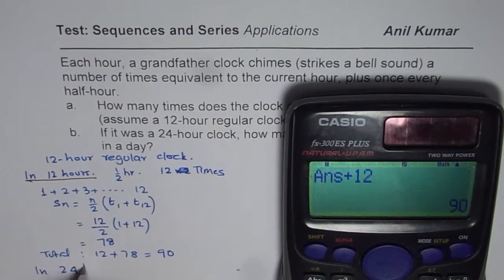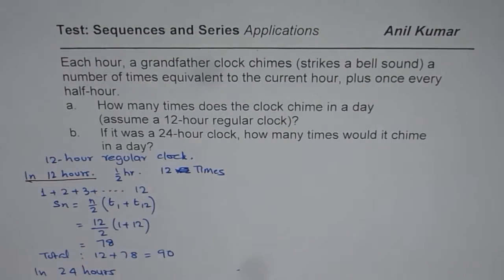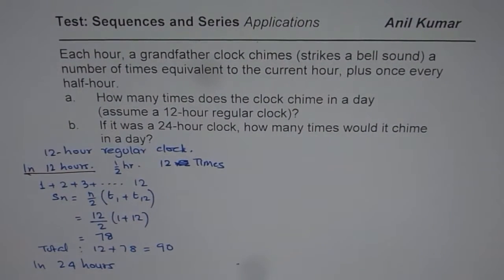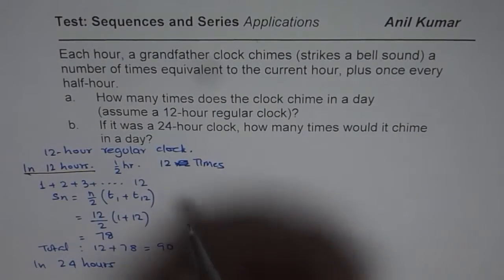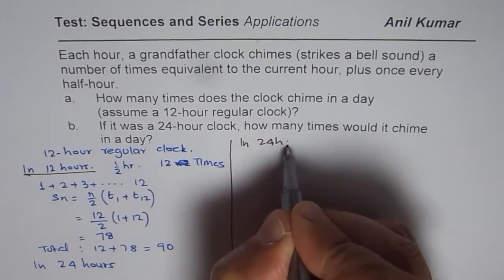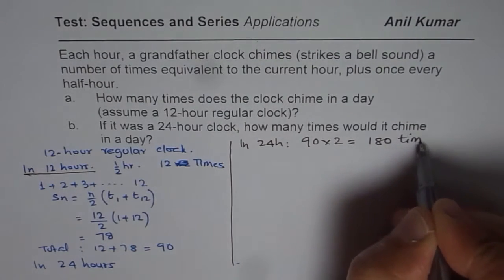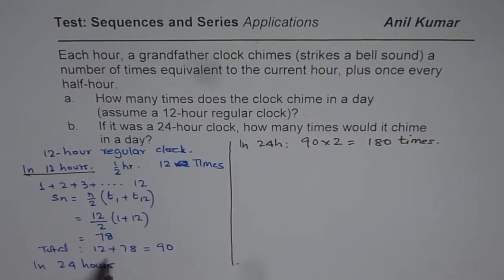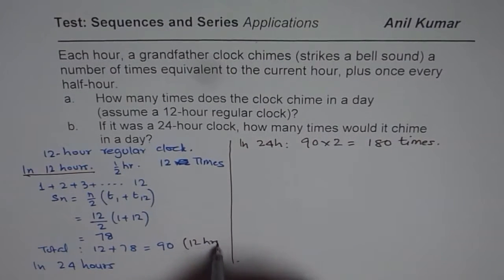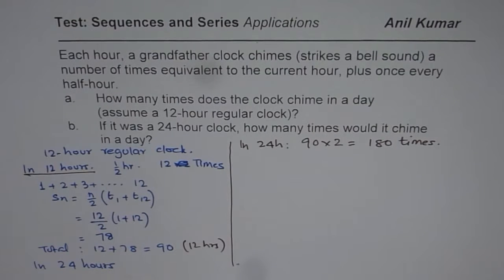In 24 hours it will be twice as many times. So in 24 hours it is going to be 90 × 2 = 180 times. That is the answer to Part A for the 12-hour clock.